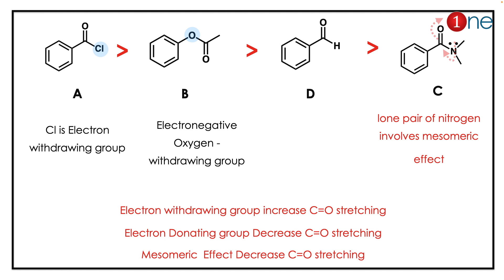The next comes D (aldehyde), even though it doesn't have any extra stability. C (amide) is least because it has nitrogen, which has a lone pair. That lone pair participates in delocalization — the mesomeric effect — so the CO stretching frequency decreases. So C will be the least, and A will be the highest stretching frequency.